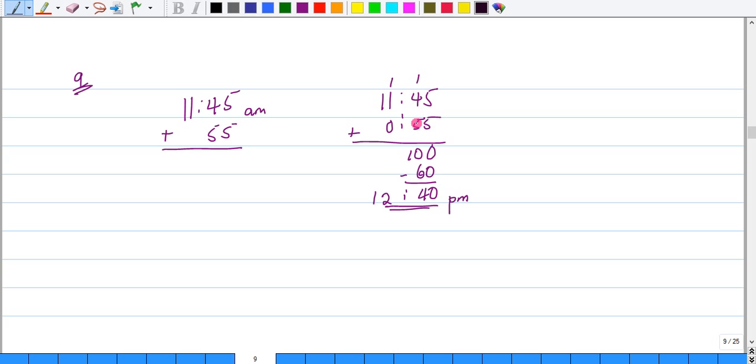Five and four, nine, and one, ten. And I would have 100 minutes here. 55 minutes plus 45 minutes would give me 100 minutes. I'm going to take 60 minutes out of it for the hour and put it on the hour side.